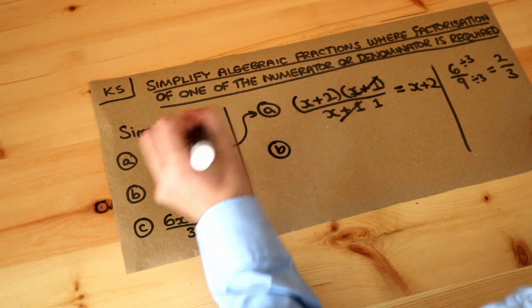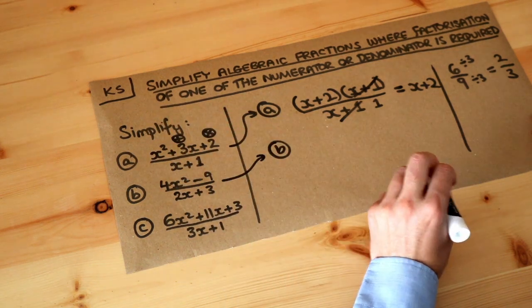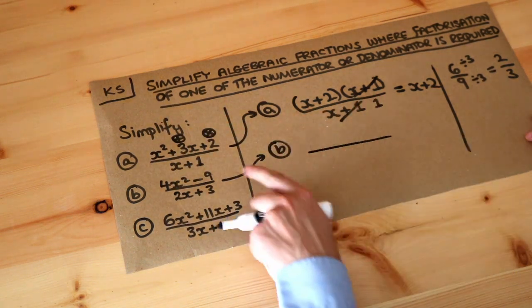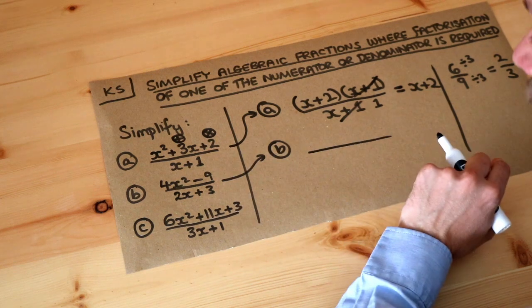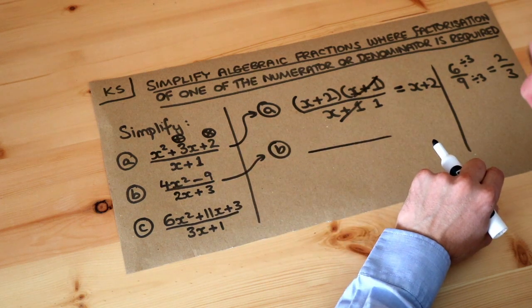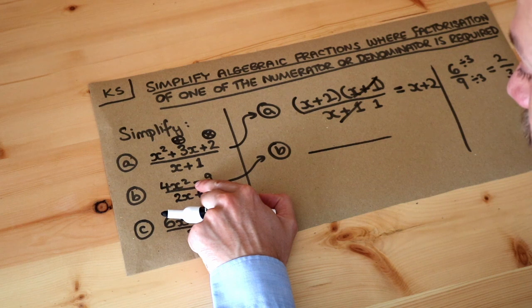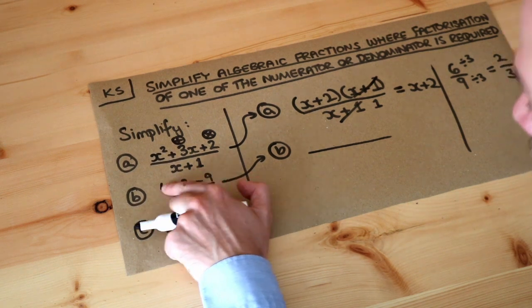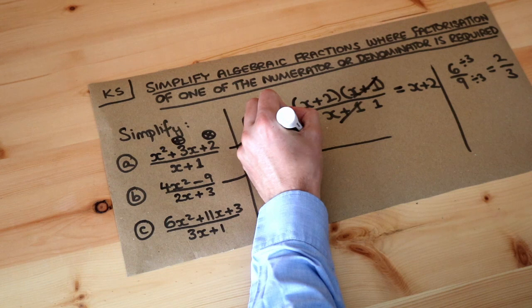What about the second one? Well we factorize again. Now can you see this numerator here is the difference of two squares? The difference of two squares is when you have a difference, a subtraction, of two squared expressions or squared numbers, and the way we do that, the way we factorize it,